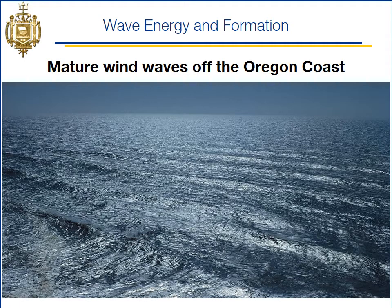Here's a picture of some mature wind waves off the Oregon coast — long wavelength, fully developed seas. You can see nice, straight, uniform wave heights here.